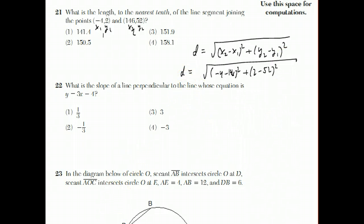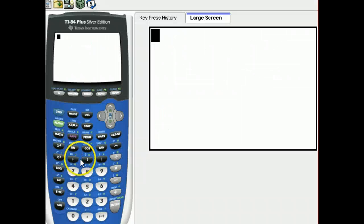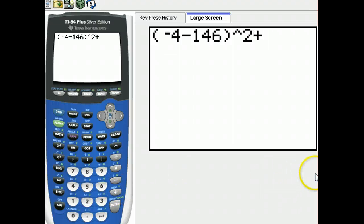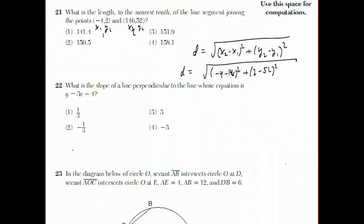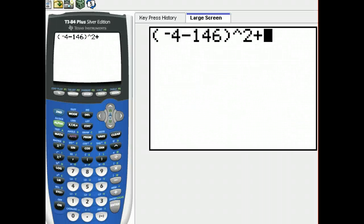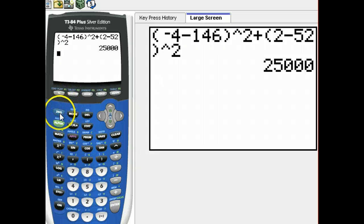I'll run this through the graphing calculator. So I'll do minus 4 minus 146, and I'll square that, plus 2 minus 52, parentheses 2 minus 52 squared. Then I could take the square root by doing second square root.